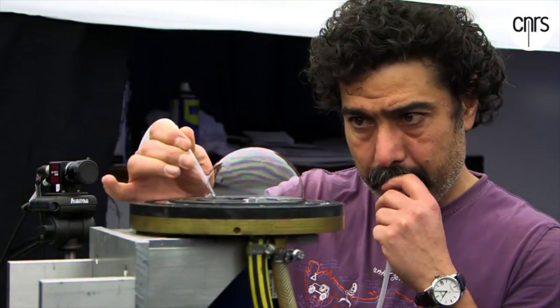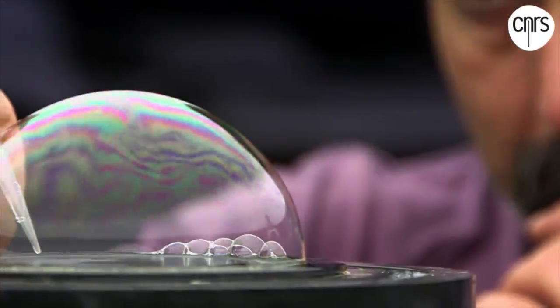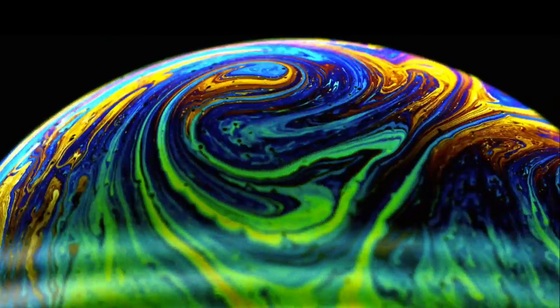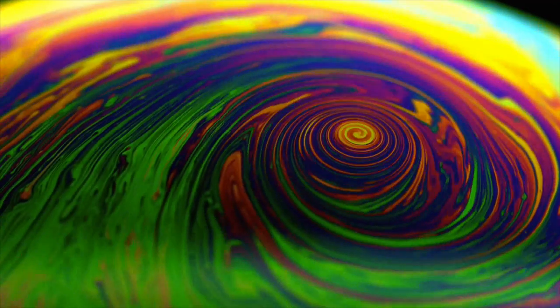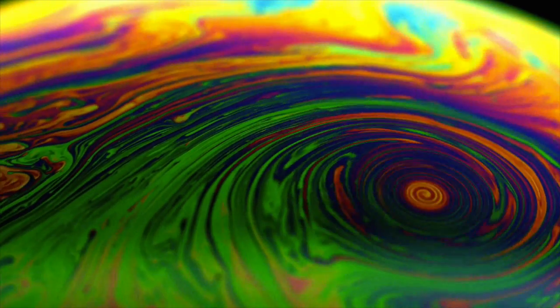Check this out. As they heated up the soap film from the bottom, convection along the bubble shell caused vortices to form in the film. These vortices mimic the behavior of hurricanes and cyclones in our atmosphere.